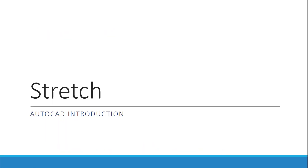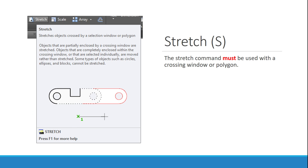The stretch command is probably one of the most difficult ones for most students to learn, mainly because you have to use a crossing window or a crossing polygon — that green dotted line selection. Remember when we discussed crossing windows and crossing polygons? You have to use a crossing polygon to use this command. You're going to see me use that in the lecture demos to pull certain objects in stretch.